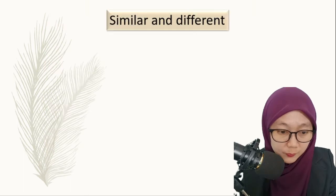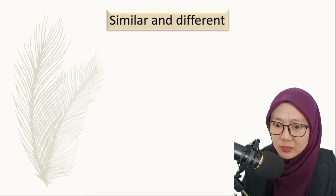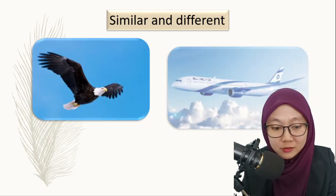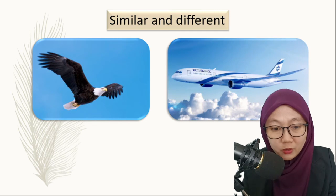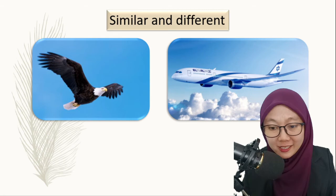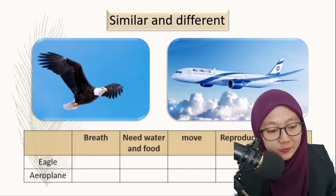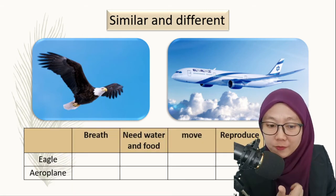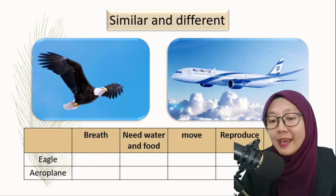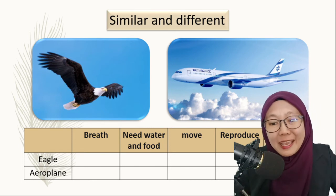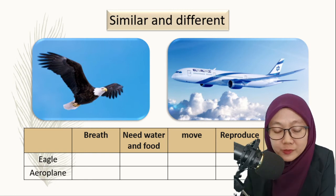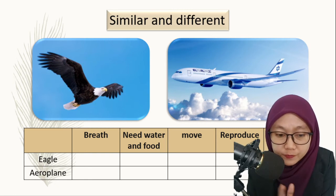Now let's move to similar and different. What is similar? What is the difference? Here we have an eagle and we have an aeroplane. We know that both of these things can fly. But what is the difference? Eagle can breathe, but aeroplane cannot breathe. Eagle needs water, but aeroplane doesn't need water — aeroplane needs gas, which is the burning fuel for the aeroplane.